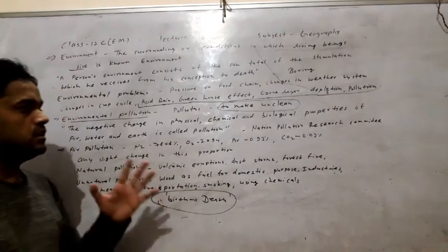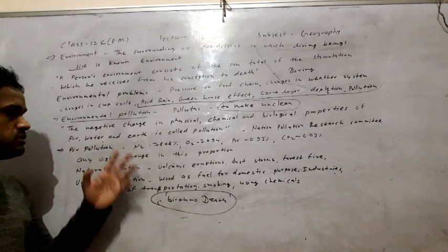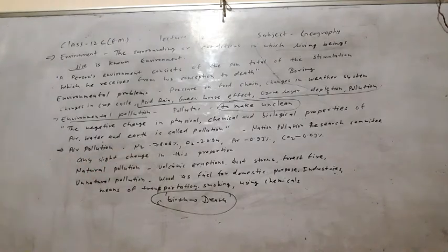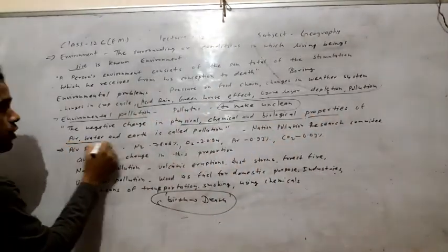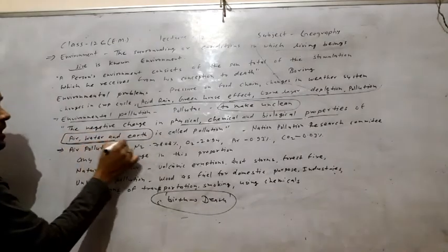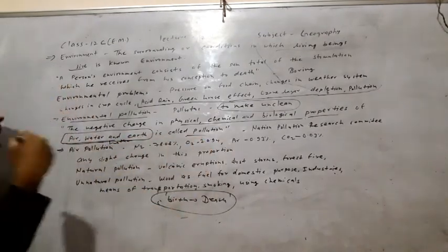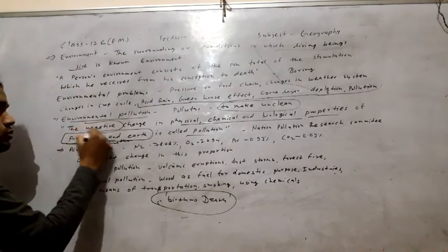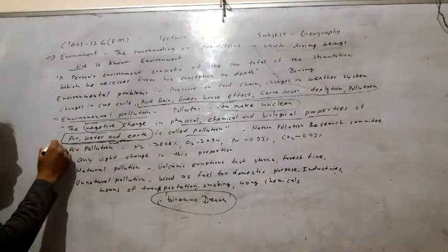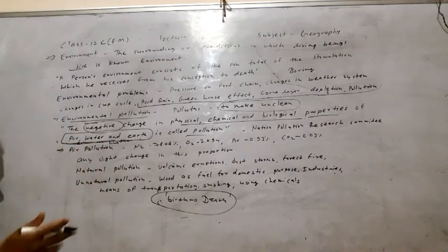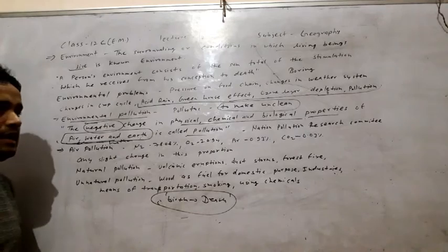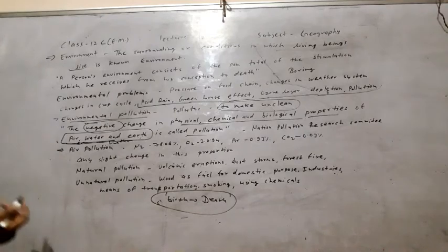According to the National Pollution Research Committee, the negative change in physical, chemical, and biological properties of air, water, and earth — that is, nature — is called pollution. Negative changes in the environment related to physical, chemical, and biological properties — that is called pollution according to the National Pollution Research Committee.